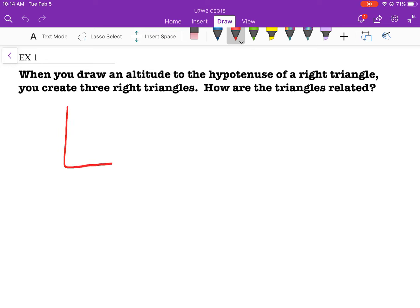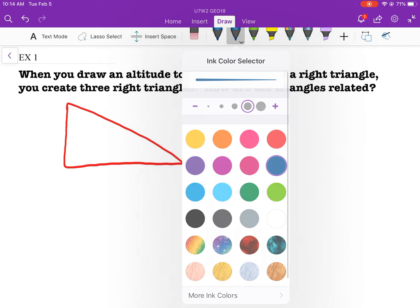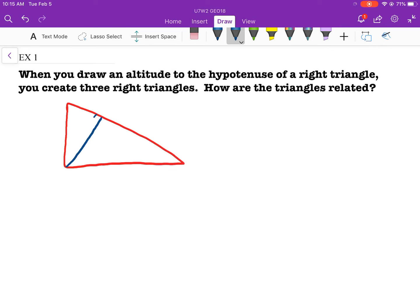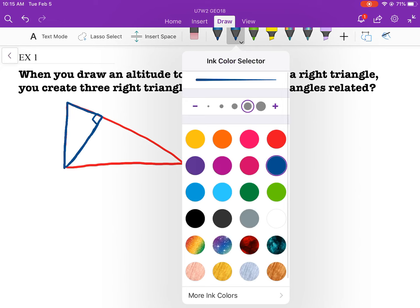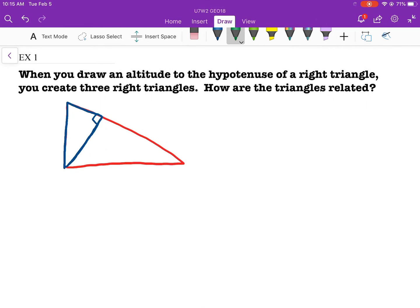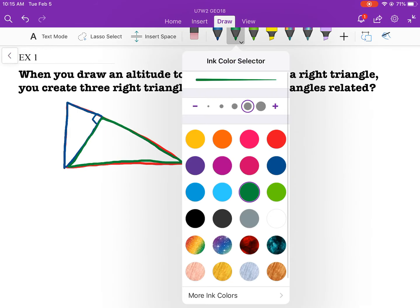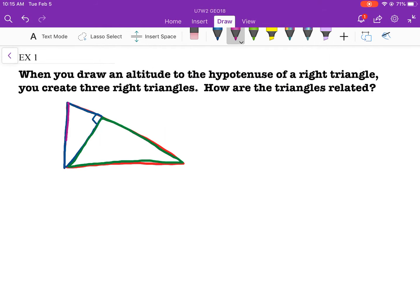So we have the right triangle. Draw an altitude to the hypotenuse of the right triangle, like so. This is 90 degrees. Create three right triangles. How are the triangles related? So it's talking about this triangle right here, talking about this triangle, and last but not least, it's talking about the big triangle that we originally drew right there.